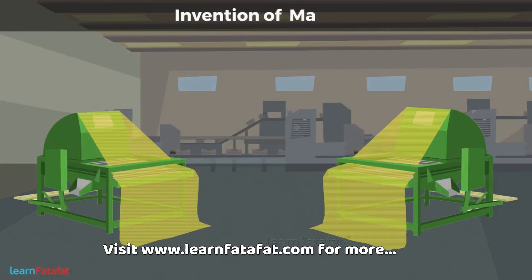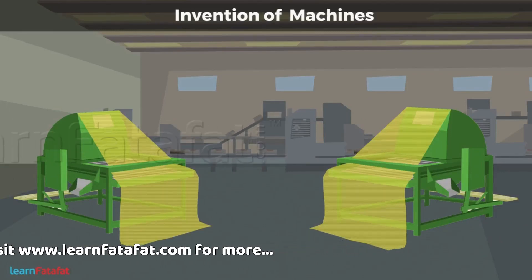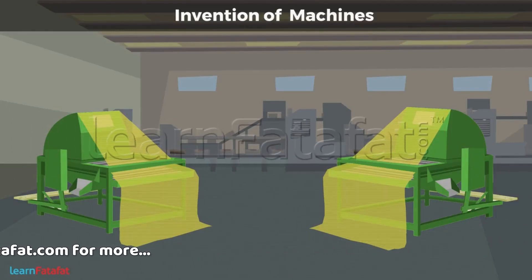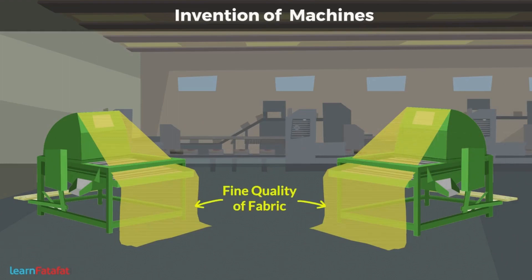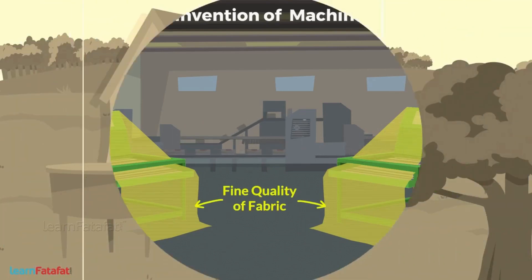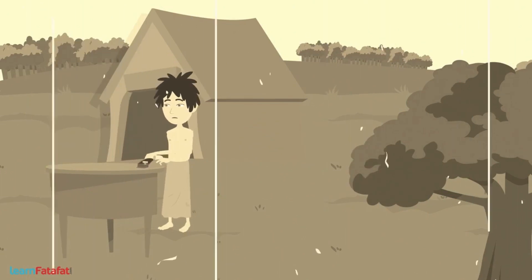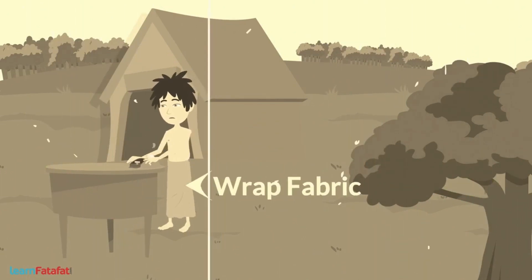Invention of machines increased the speed of making fabric. These machines produced fine quality of fabric. In earlier days, people used to wrap the fabric around their body.